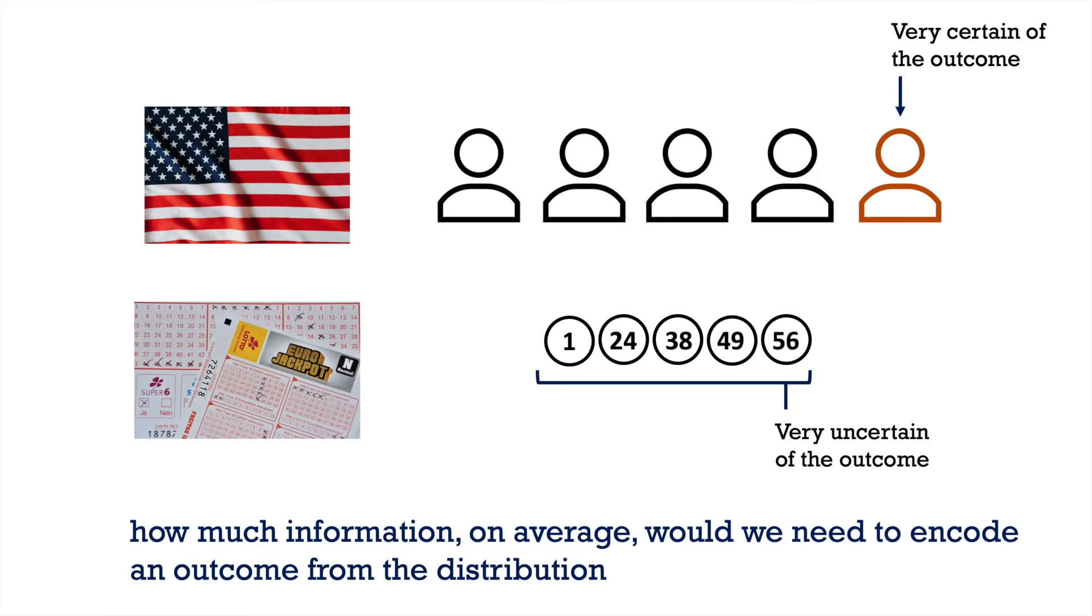If you think about it, it makes sense to quantify uncertainty using information. The more uncertain you are, the more details you may need to figure out what actually happened. But if the outcome is effectively known beforehand, then you'll need little information, maybe even none, to know the outcome.